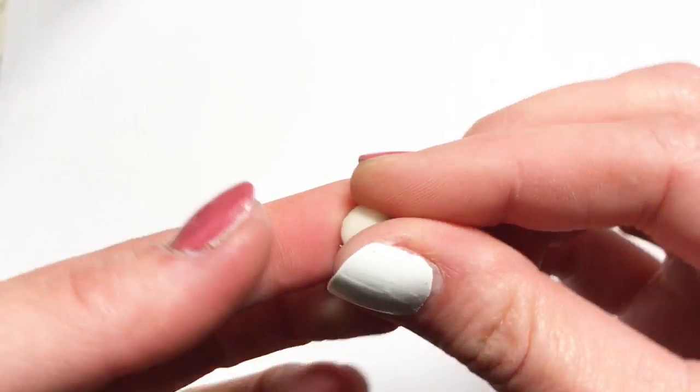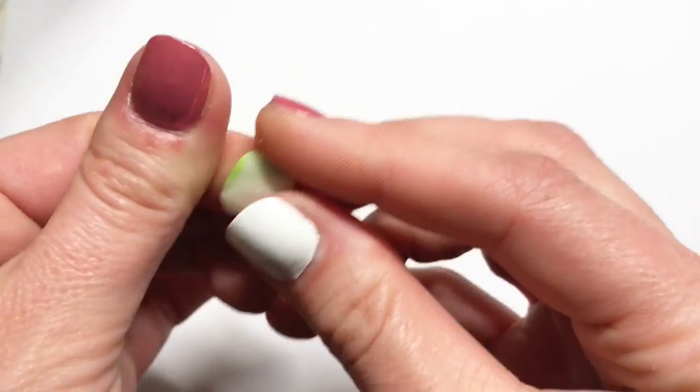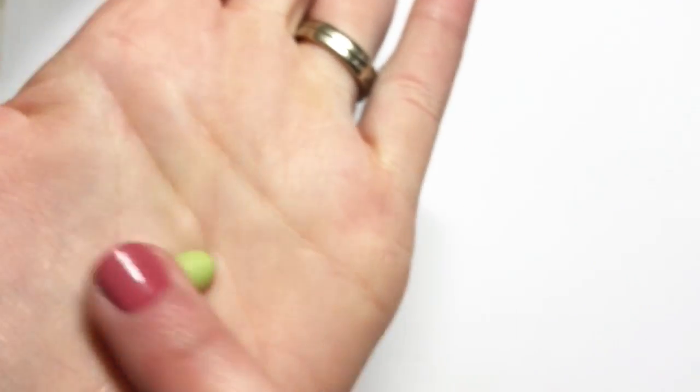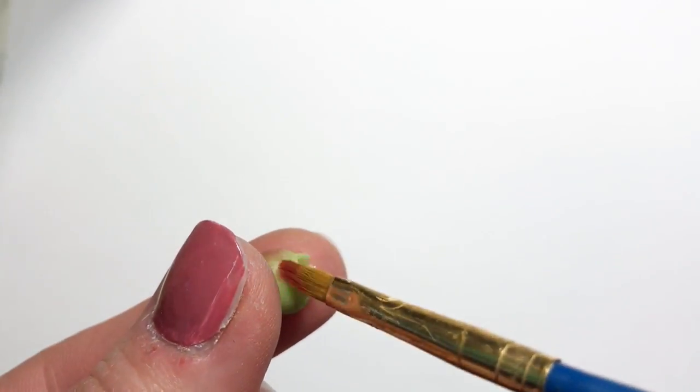To make the green ones, you'll need mostly translucent clay with just a little bit of the lime green clay. Use the tool in the same way that you did with the blue blueberries.